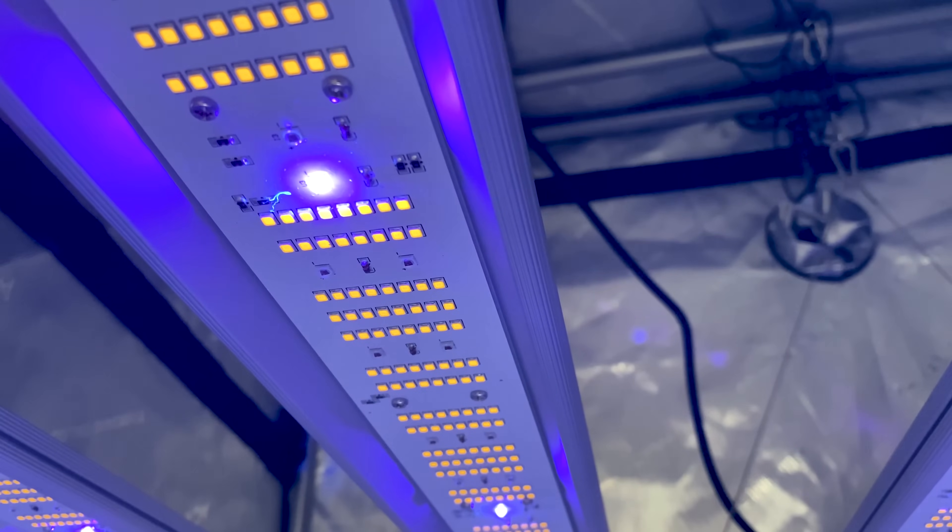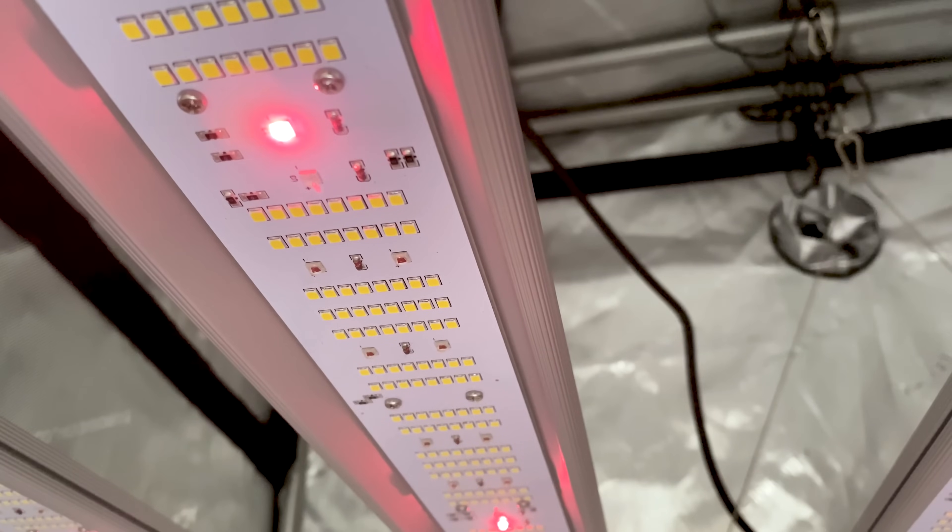For example, you can activate the UV light for a few hours during the lights-on phase and trigger the IR light after the lights-off phase to help plants transition to sleep faster, shortening the dark period.